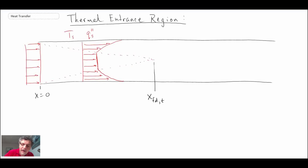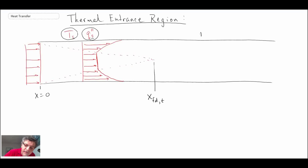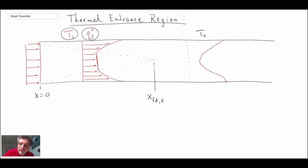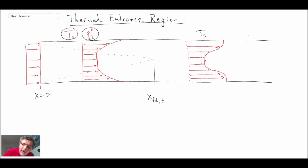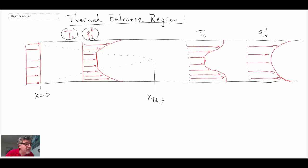The nature of the profile we have will depend on the boundary conditions around the pipe — be it a constant temperature boundary condition or a constant heat flux. For a constant temperature boundary condition, the wall surface temperature is different from that of the fluid, and the temperature profile will look something like this. For a constant heat flux boundary condition, the temperature profile would look something like that.